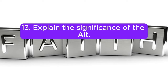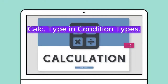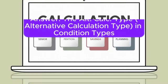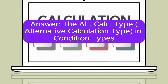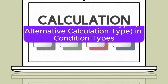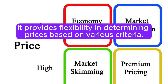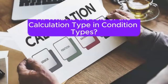Question 13: Explain the significance of the ALT CALC type in condition types. Answer: The ALT CALC type (alternative calculation type) in condition types allows for the alternative calculation of prices based on different methods. It provides flexibility in determining prices based on various criteria.